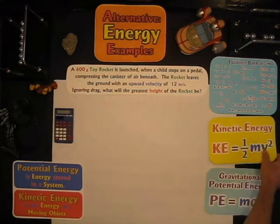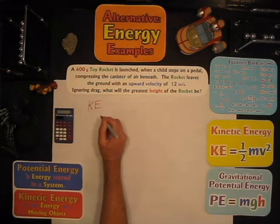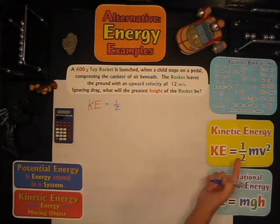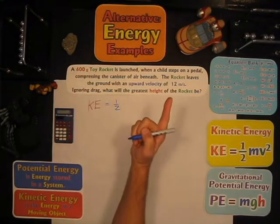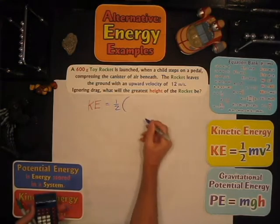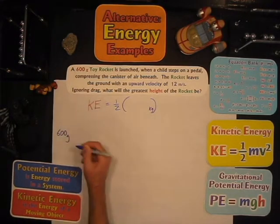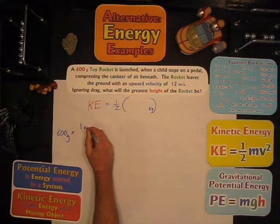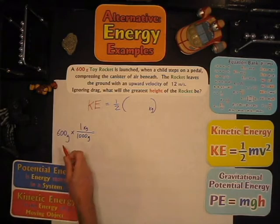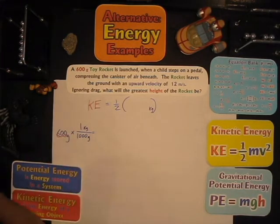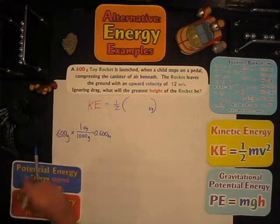The first thing we need to do is find its kinetic energy. Kinetic energy equals one-half m — what's the mass? Oh yeah, 600 grams. Wait — that's not the right units. I want to put the mass in kilograms. So if it's 600 grams, I multiply by 1 kilogram over 1,000 grams, which is basically dividing by 1,000. Move the decimal once, twice, three times and you get 0.600 kilograms, because of course the grams cancel.